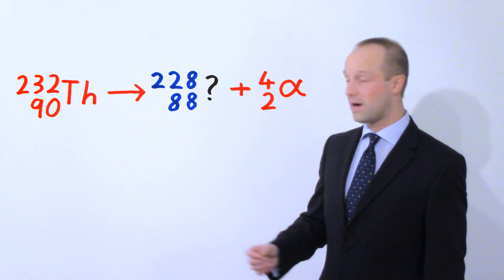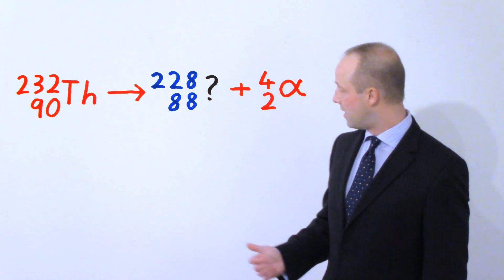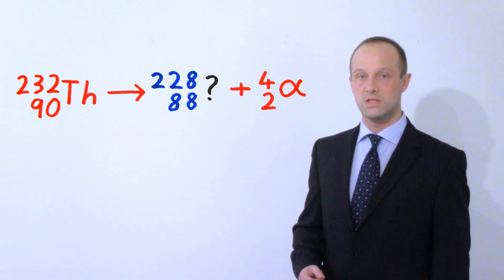So, the 232 minus 4 gives us 228 and the 90 minus 2 gives us 88.